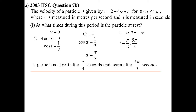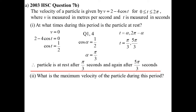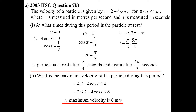The particle stops at π/3 seconds and again at 5π/3 seconds. For the maximum velocity, we use what we know about trig functions rather than calculus. The amplitude of the cosine is 4, so that function ranges between −4 and 4. Adding 2 shifts it, so the function goes between −2 and 6. Therefore, the maximum velocity is 6 metres per second.